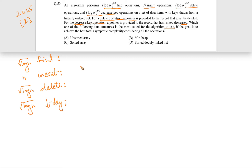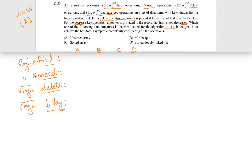We need to find which data structure is most efficient for these operations. We will evaluate all four data structures — A (unsorted array), B (min-heap), C (sorted array), and D (sorted doubly linked list) — by analyzing the time complexity of each operation individually, then multiply by the count to get total complexity.